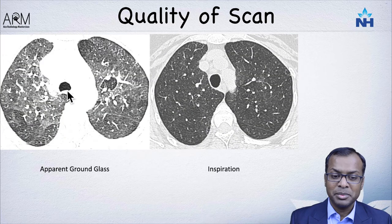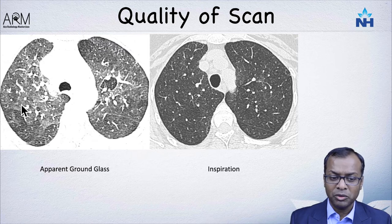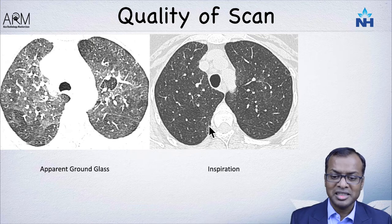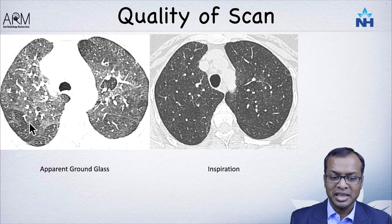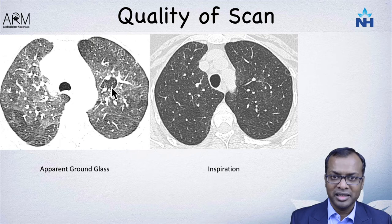Inspiration versus expiration makes a huge difference. If your technician hasn't asked the patient to hold their breath properly and you got an expiratory scan without recognizing it, you may end up calling those areas as ground glass. In reality, this patient's lung on the inspiratory scan is absolutely normal — what we are seeing are patchy areas of air trapping on the expiratory scan. Make sure you get both inspiratory and expiratory scans in patients with suspected interstitial lung disease.